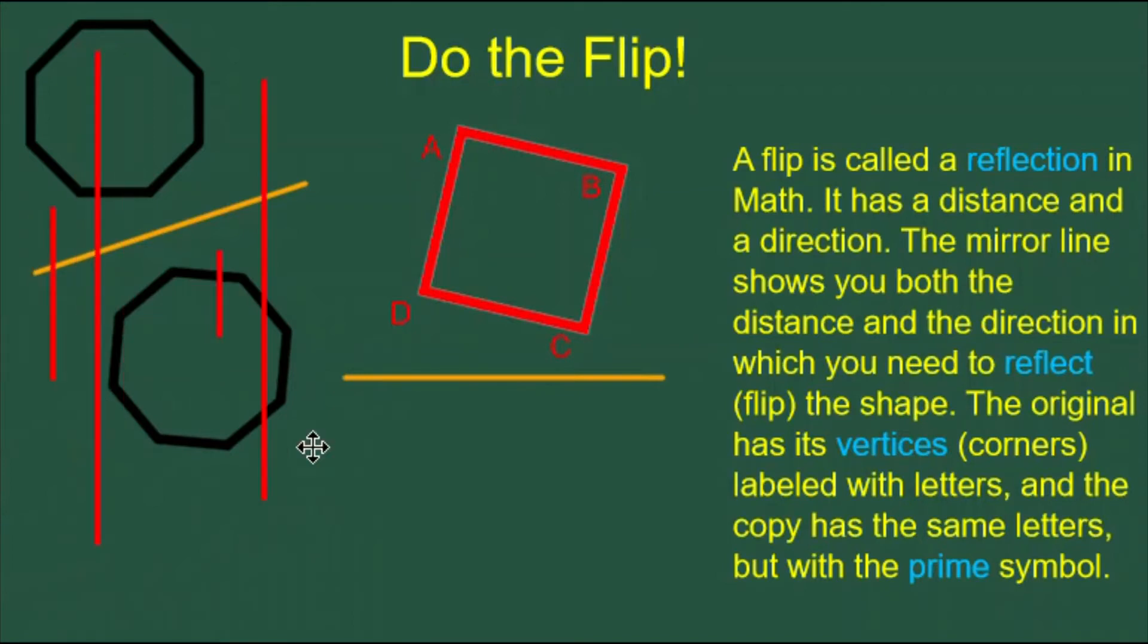If I do this with all four of the vertices, I have lines that look like this. I can put a dot at the end of each of these four lines, and then I can connect the dots to draw my reflection. I have another square, which is a reflection of the first square.